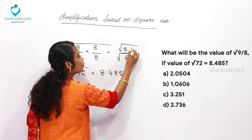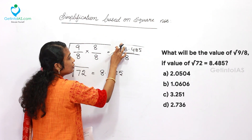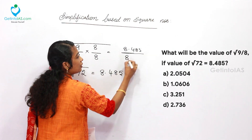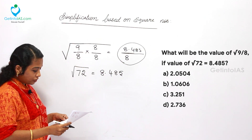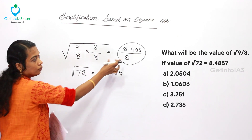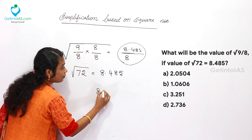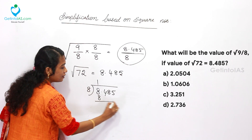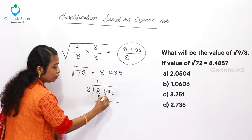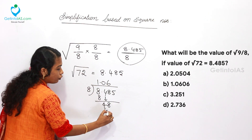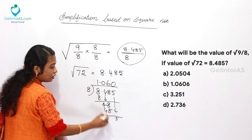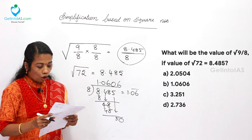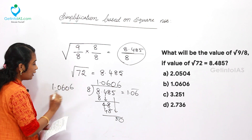So we write 8.485 divided by 8. Now we calculate: 8.485 ÷ 8. 8 goes once into 8, then for the decimal: bring down 4, 0 times; then 8 — 6 times 8 is 48; bring down 5, 0 times. The result is 1.0606 recurring. This is given in option B — 1.0606 — and that is our answer for this question.